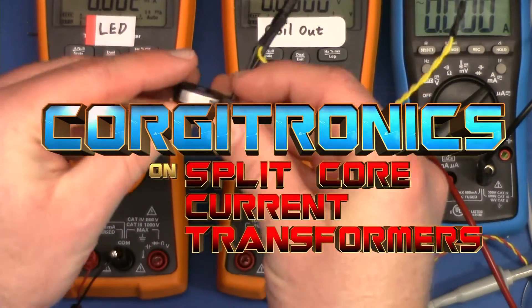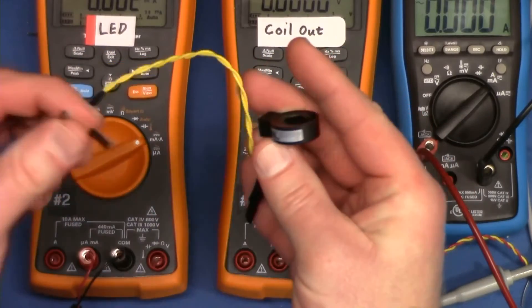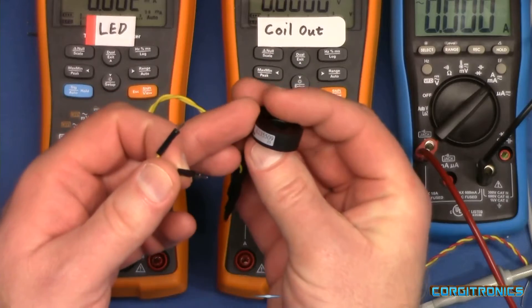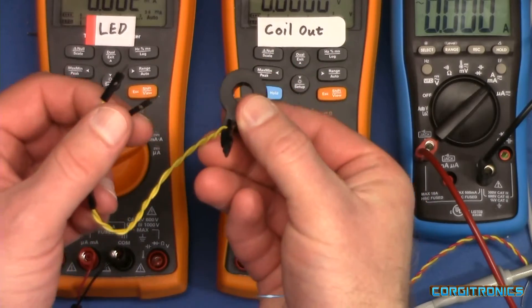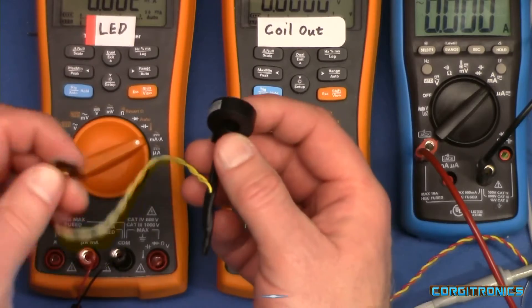So last week we looked at a current transformer, and it's pretty straightforward and easy to use. Just run your hot wire for your motor or whatever you're going to sense through the center of this, and then get a low voltage output on the little wires. It was great.